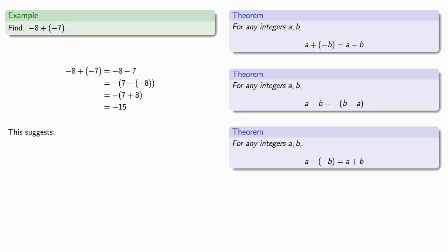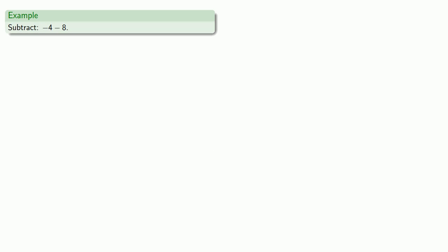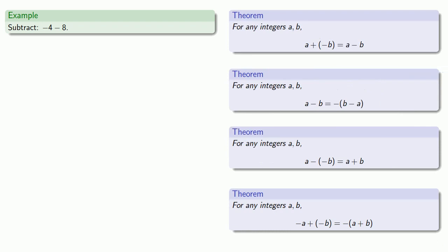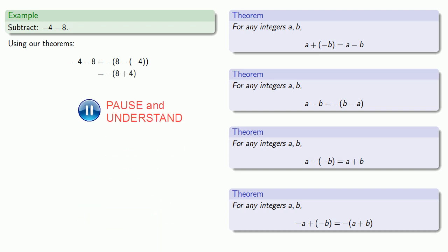Looking at the numbers 8, 7, and 15, the relationship here is that the additive inverse of a plus the additive inverse of b is the same as the additive inverse of a plus b. How about minus 4 minus 8? Using the theorem a minus b equals additive inverse of b minus a, we reverse the order to get additive inverse of 8 minus the additive inverse of 4. Subtracting an additive inverse becomes a plus, so this is 8 plus 4. Evaluating inside gives 12, so the final answer is the additive inverse of 12.